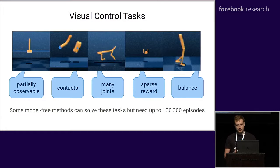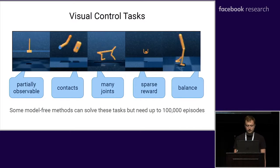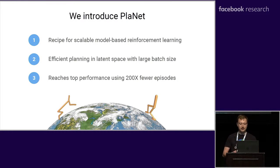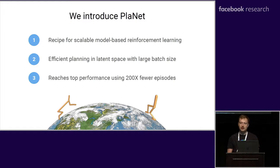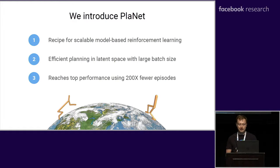Top model-free algorithms can solve these tasks, but they are very data inefficient, needing up to 100,000 episodes. We present Planet, a recipe for scalable model-based reinforcement learning. Planet learns a world model and then efficiently plans in the latent space of this model, allowing to evaluate thousands of action sequences in parallel using a large batch size. This way, Planet reaches top performance on these tasks while using 200 times fewer episodes than model-free algorithms.